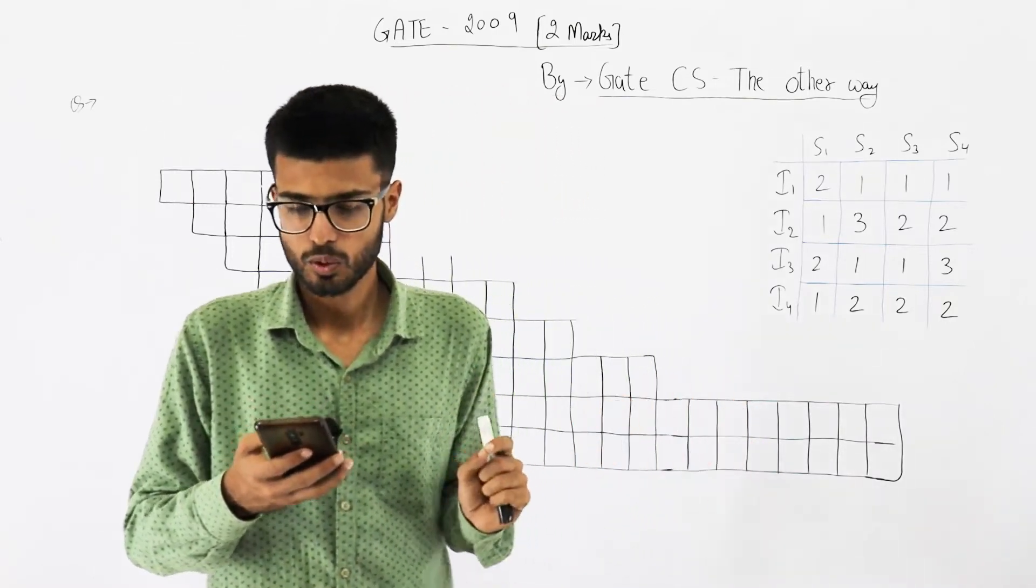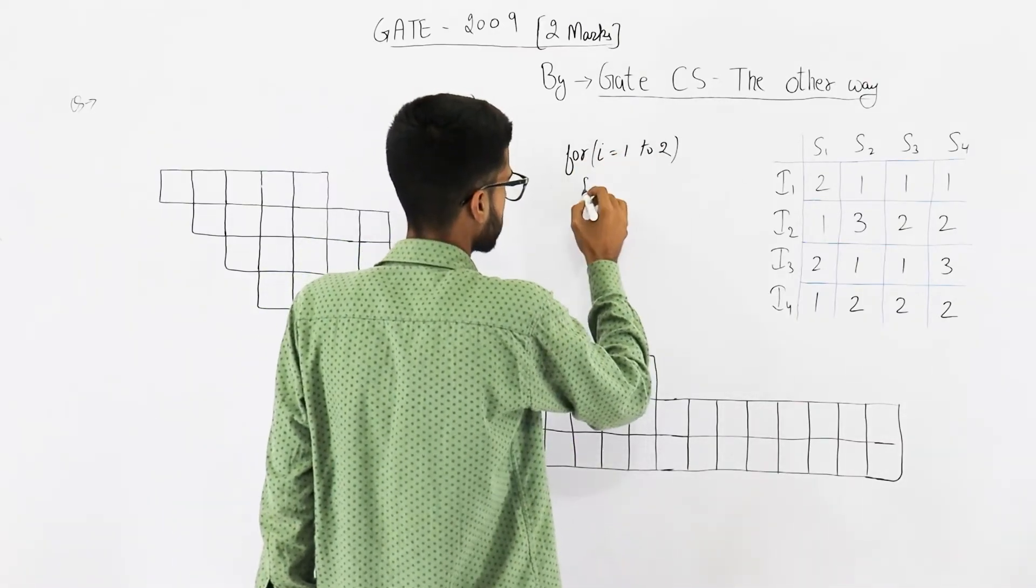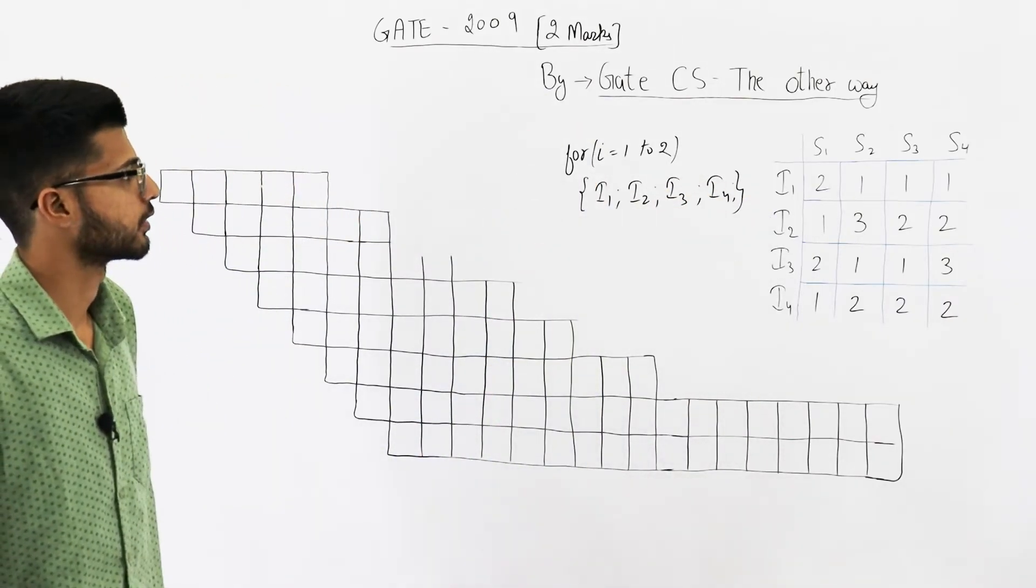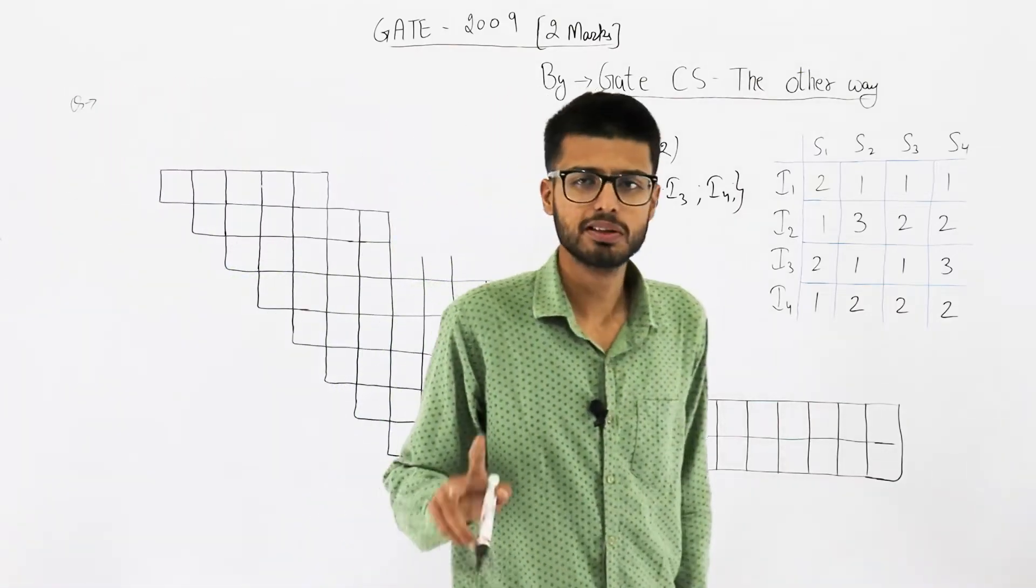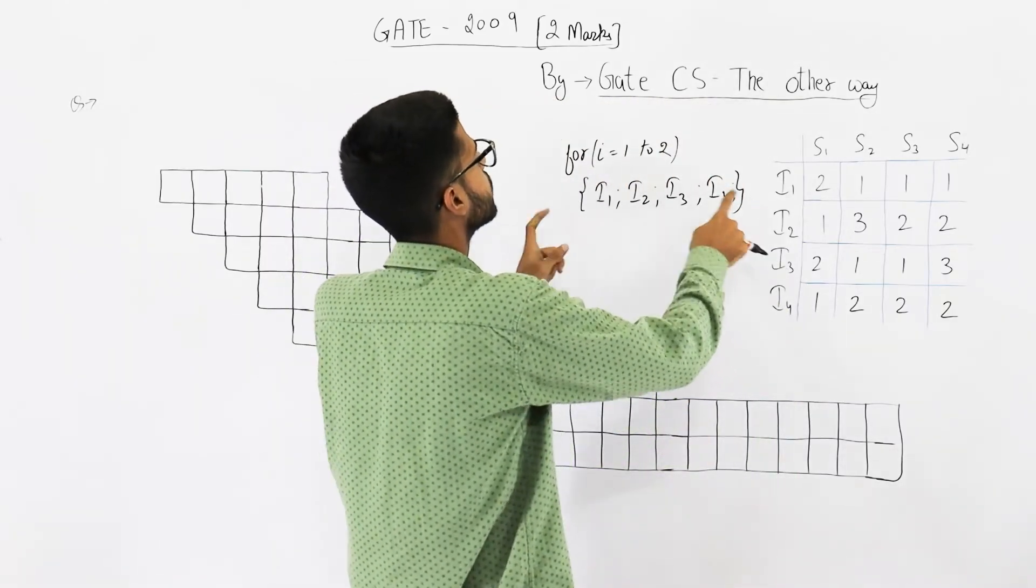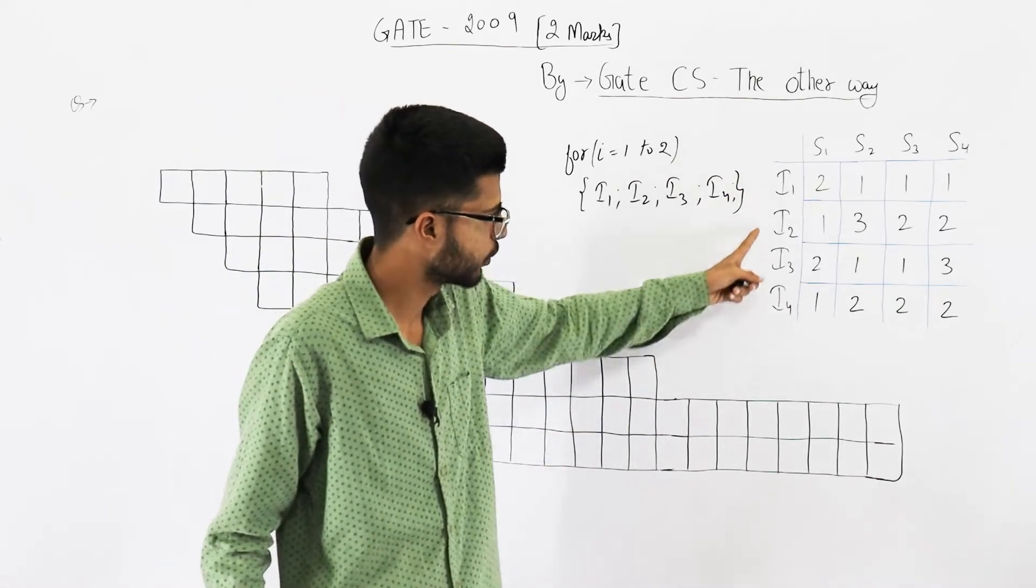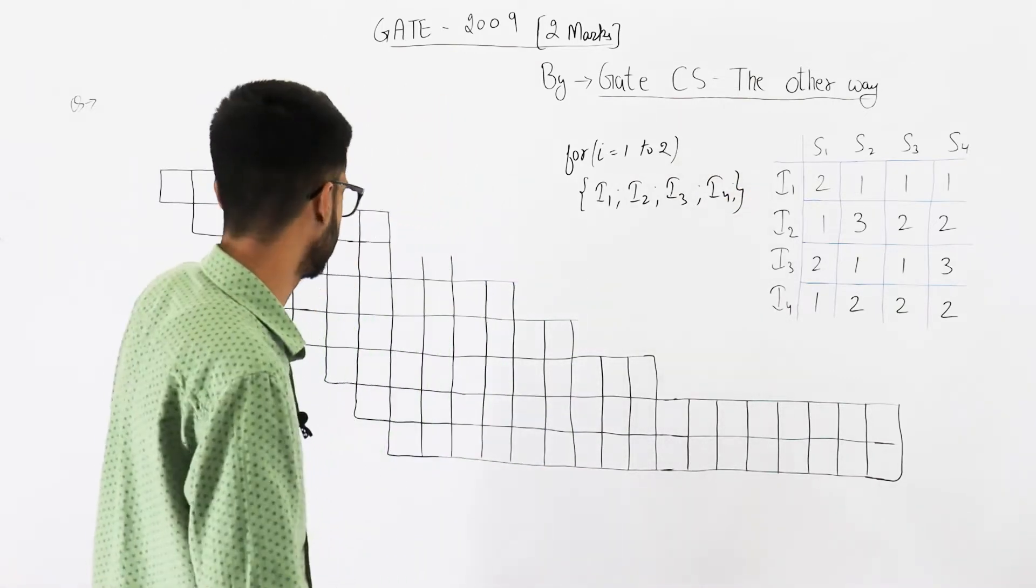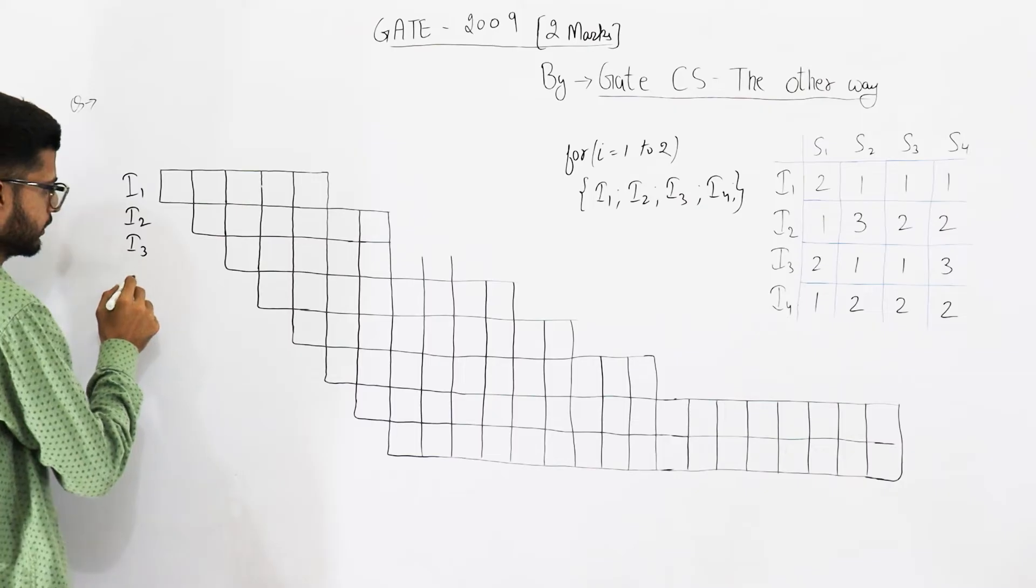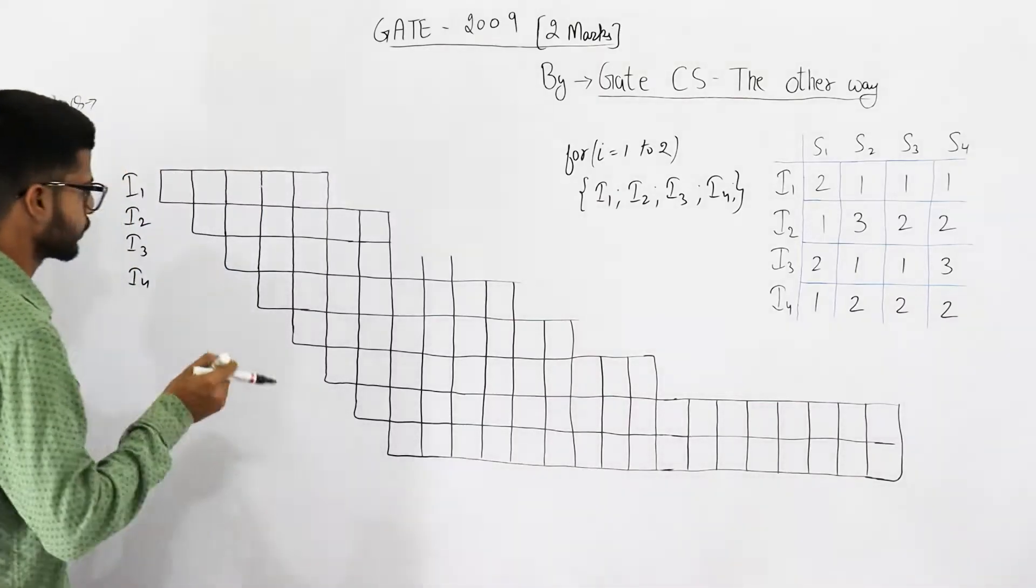For i equals 1 to 2 means repeat two times. What is to be repeated? This body of loop - that means i1, i2, i3, i4. Again you repeat this, that means these four instructions are executed twice. In total there are eight instructions: i1, i2, i3, i4, then you start again - i1, i2, i3, i4 is repeated again.